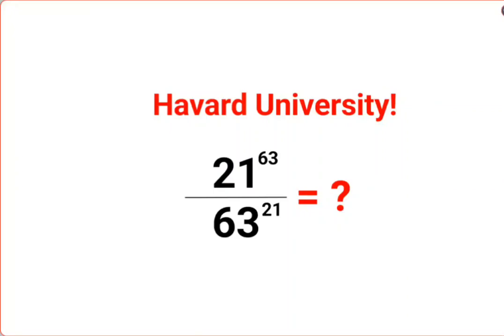Welcome everyone. Today we are going to understand how to solve this Harvard University problem. We have 21 raised to 63 over 63 raised to 21.